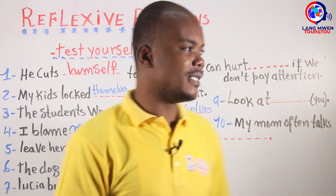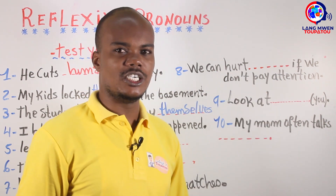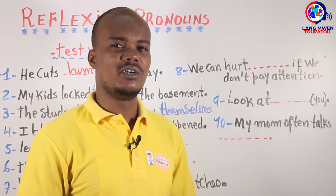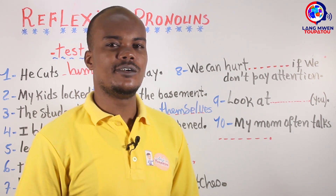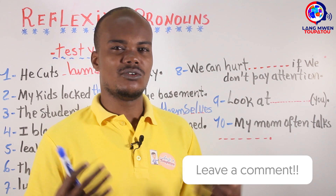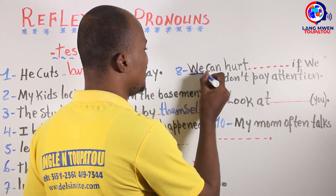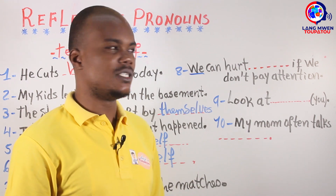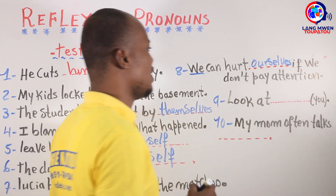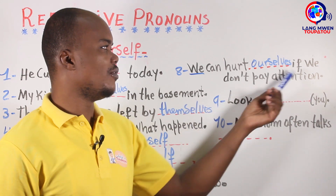Number eight: 'We can hurt ___ if we don't pay attention.' The subject is 'we.' The reflexive pronoun for 'we' is 'ourselves.' So: 'We can hurt ourselves if we don't pay attention.'